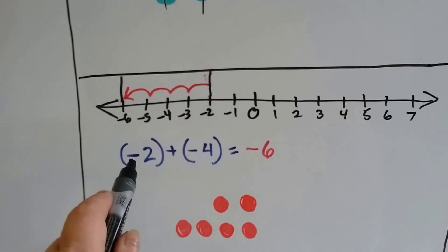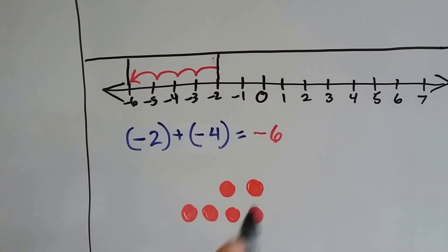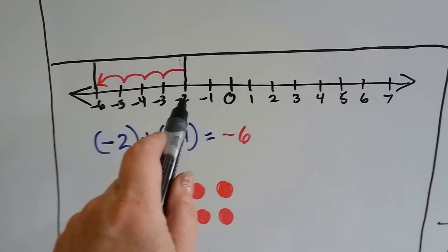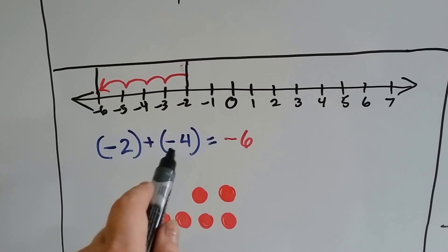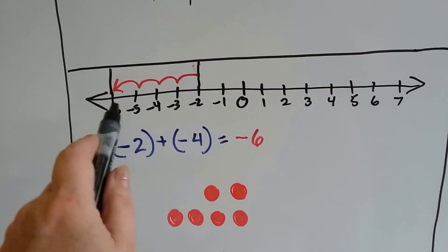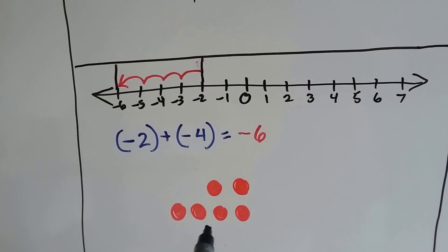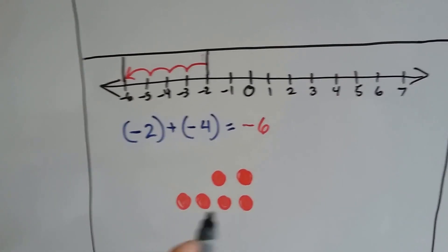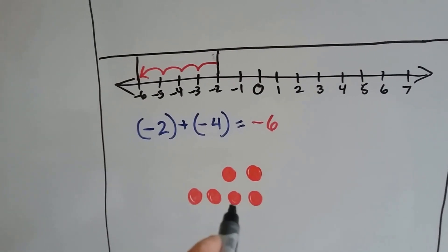We've got 2 negative chips and we're adding 4 negative chips — that's going to give us 6 negative chips. We're at negative 2 on the number line, and we're adding another negative 4: 1, 2, 3, 4 — that gets us to negative 6. None of them cancel each other out because we're adding negatives to negatives; we're just getting more of them.